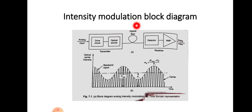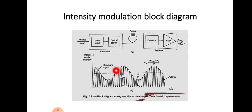This is the basic block diagram of intensity modulation. Here you can see a diagram of intensity modulation — the carrier signal frequency is given, and this is the baseband signal represented by the overlap, and this is the modulated signal itself. Based on the intensity of the modulating signal, the carrier signal is modulated. The information carrier part is the intensity, not the phase or frequency.